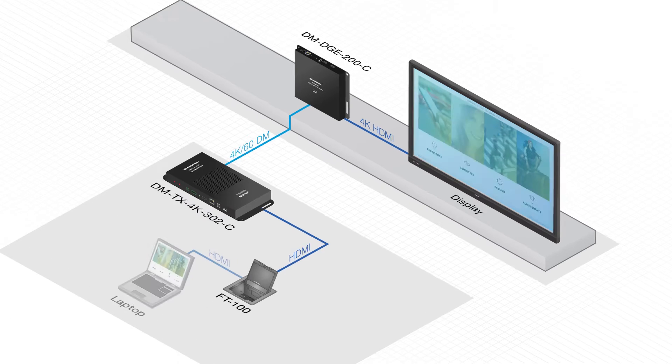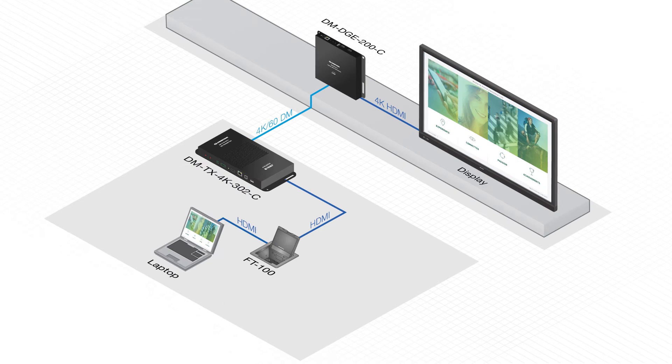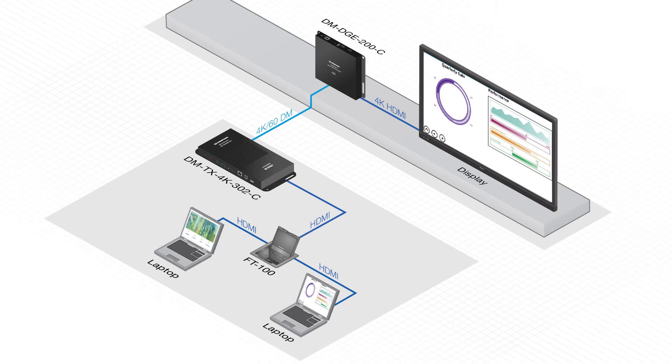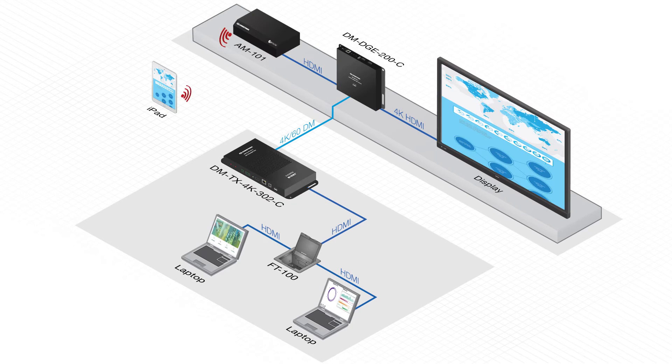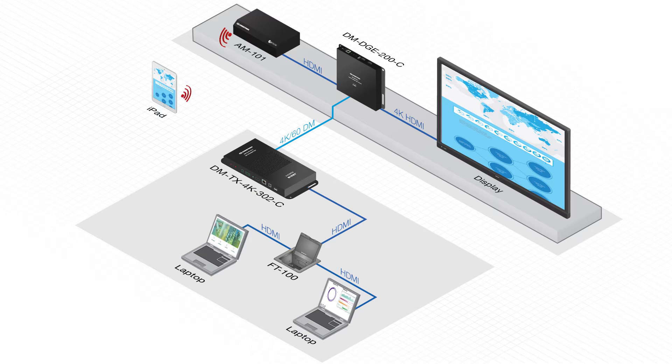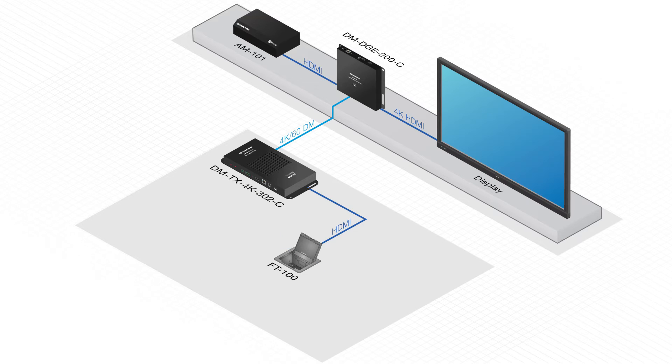The DGE200 provides auto-switching between the sources plugged into the transmitter. It will also auto-switch to any source connected to the HDMI input. The DMDGE200 also features auto-display on-off. When you connect a laptop, the display can automatically turn on, and when all sources are disconnected, the display will automatically turn off.